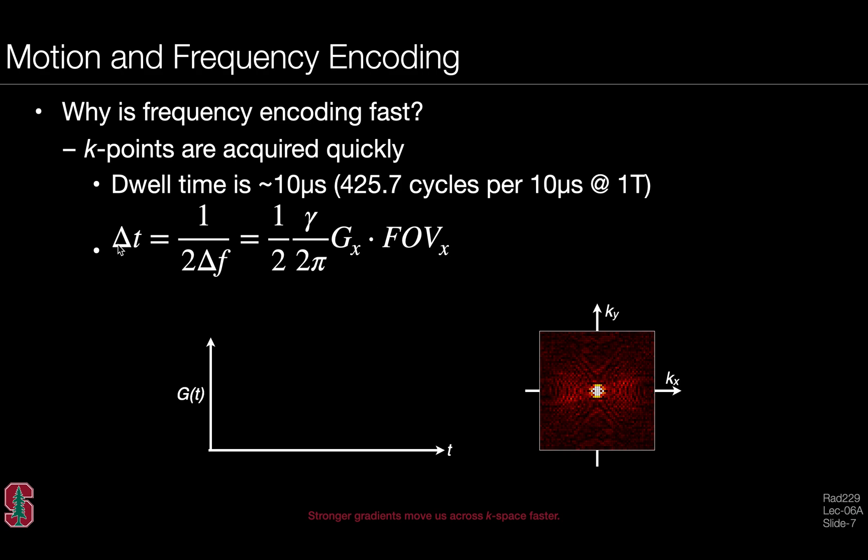Once we pick a dwell time, or in fact, we might pick the readout bandwidth instead in terms of frequency, that leads us to design the gradient amplitude that we need for a particular field of view. The gradient amplitude is directly related to our dwell time. Stronger gradients will allow us to dwell for shorter periods of time, and slow gradients will have us dwelling for longer periods. Depending on how we've designed our gradient waveform, we will move quickly or slowly across K-space. Stronger gradients move us across K-space even faster. But if we move across K-space very fast, we also have fewer cycles of precession during every K-point acquisition, and this contributes to lower signal-to-noise.